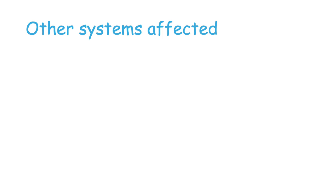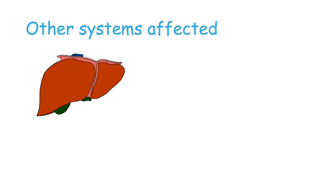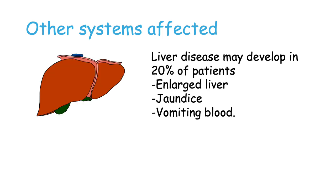Some other organs affected include the liver, where liver disease may develop in 20% of patients, usually presenting as an enlarged liver or jaundice, but it may be severe to the point of the patient vomiting blood.